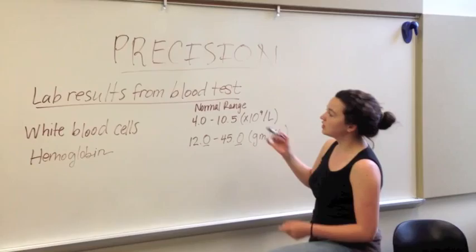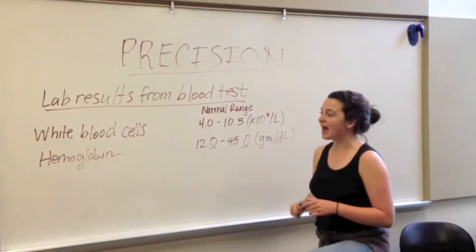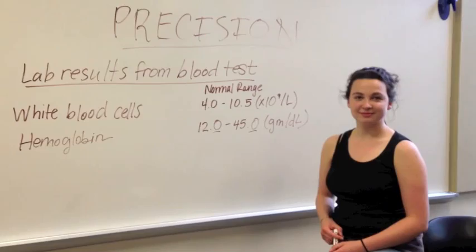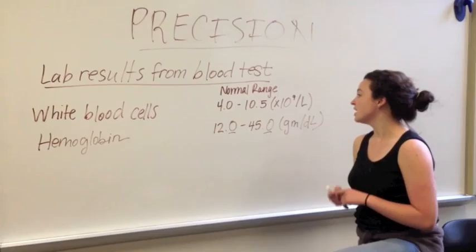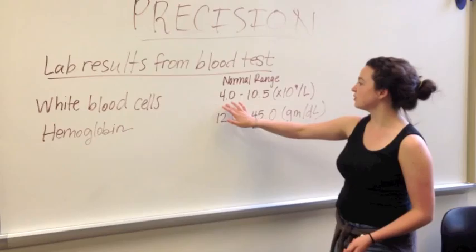What I mean by this is when looking at lab results from a blood test, you want to have the highest case of precision. You want to be most precise to make sense of your results. In this case, we are dealing with white blood cells and hemoglobin.